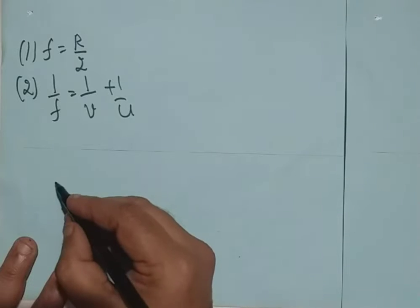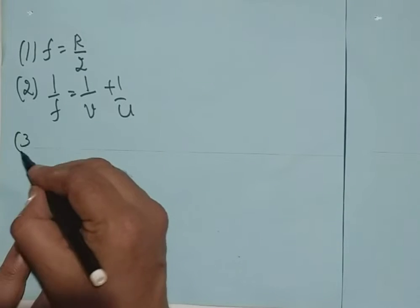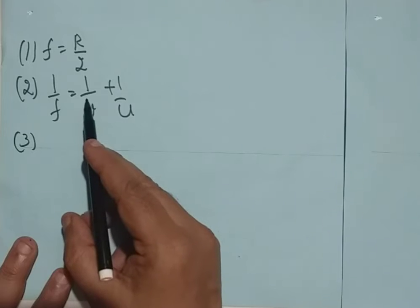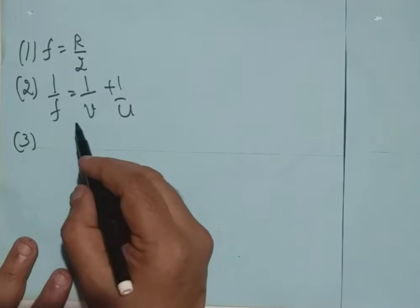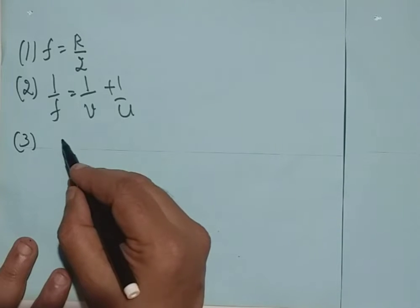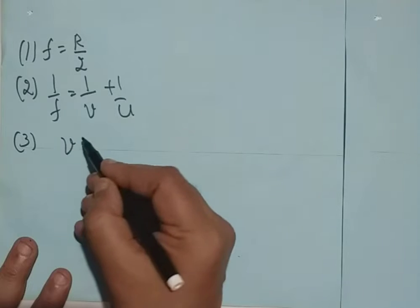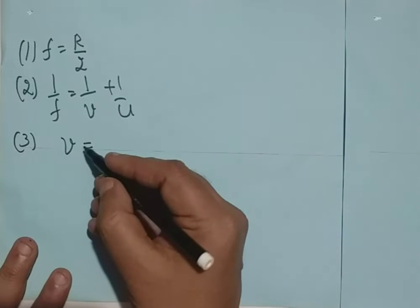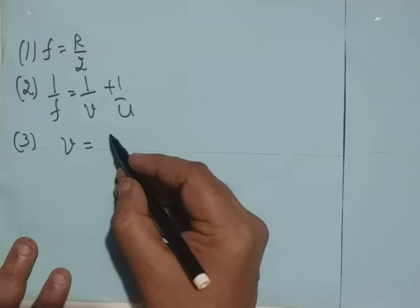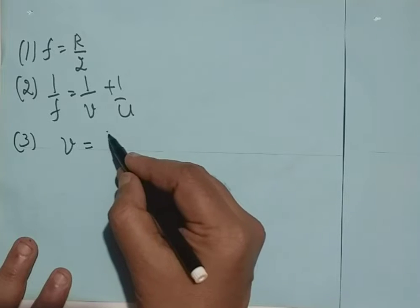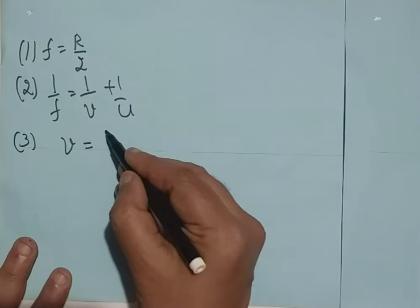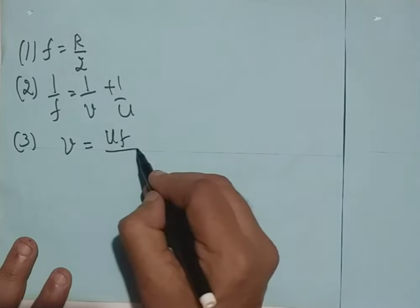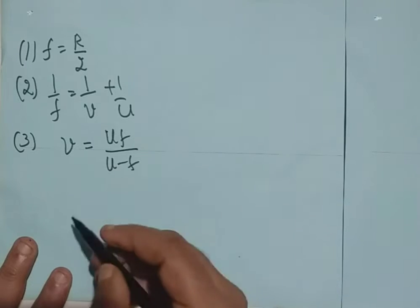The third formula, we can derive it by taking the LCM and rearranging from the second formula, where we can write directly the equation for image distance, which is mostly asked in many problems. Therefore, V equals UF by U minus F.